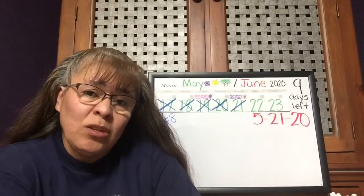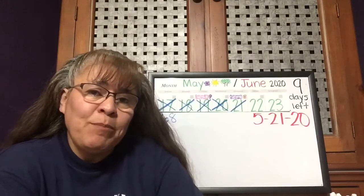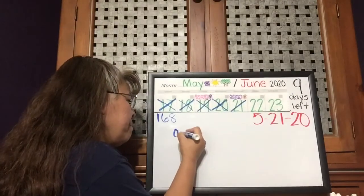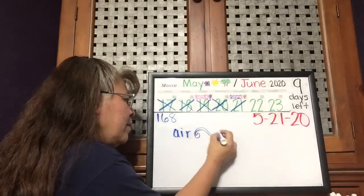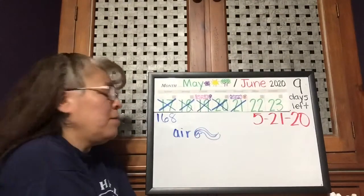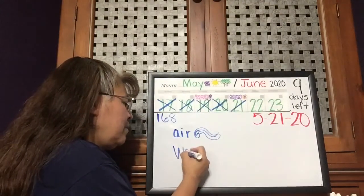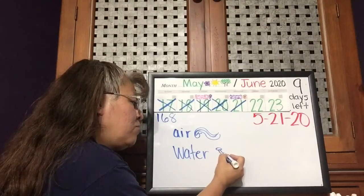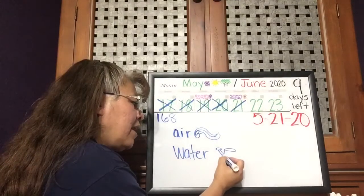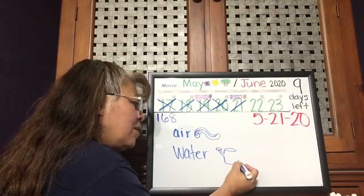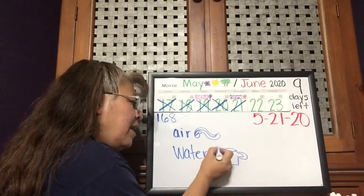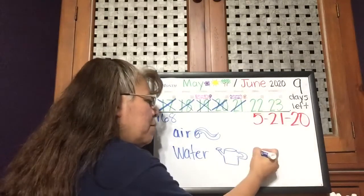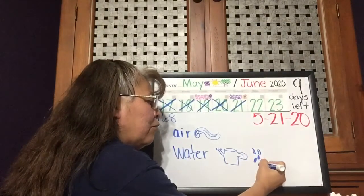Do you remember what plants need to live? Just like people — plants do need air. Plants also need water. I'm going to draw a little watering can. We can water the plants, but plants can also get their water from rain.